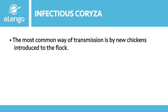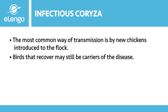New chickens introduced to a flock are most likely going to be carriers of the disease. It is transmitted by direct bird-to-bird contact, inhalation of infectious aerosols coughed into the air, ingestion of feed and water contaminated with feces or discharge from infected birds, and contaminated clothing and shared equipment. Chickens who recover from infectious coryza often remain carriers and may shed the bacteria in their feces during a stressful event.